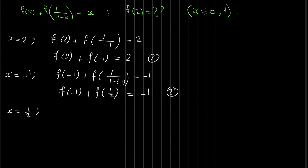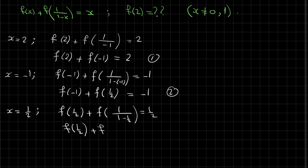Substituting x = 1/2, we get f(1/2) + f(1/(1 - 1/2)) = 1/2. That is f(1/2) + f(1 over 1/2) = 1/2.